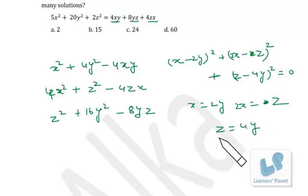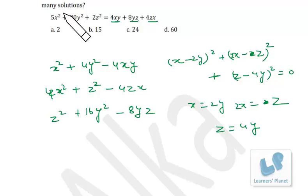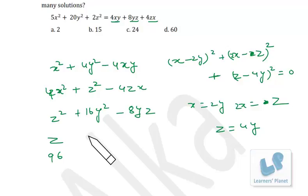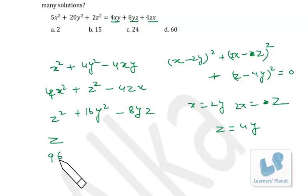So Z is the biggest number and must be a multiple of 4. Since X, Y, Z are two-digit natural numbers, the largest two-digit multiple of 4 is 96, so the maximum value of Z is 96.